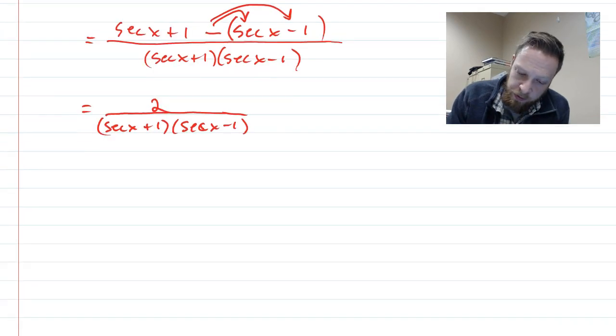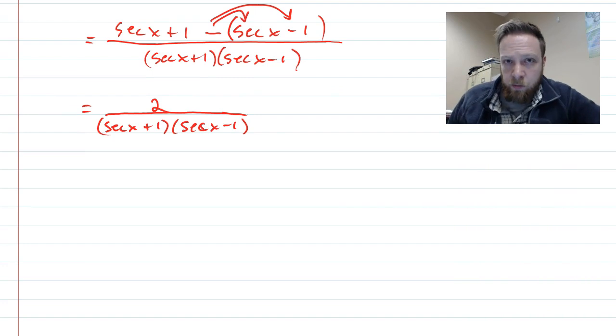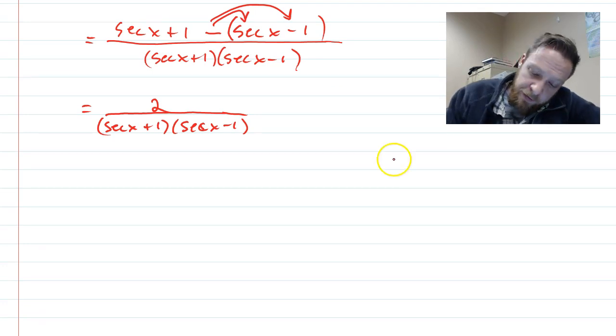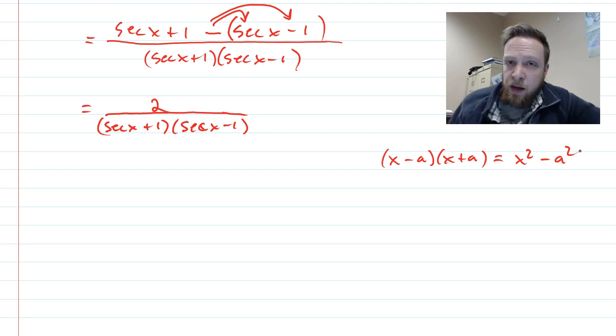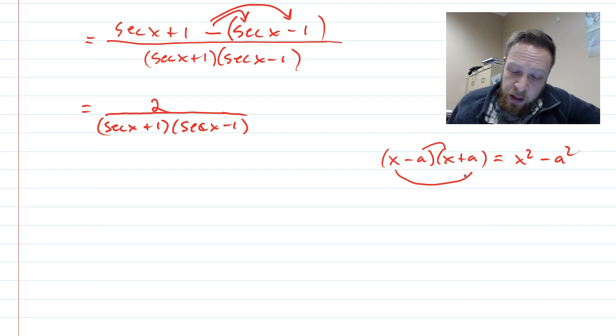Now, you may remember there was something called difference of squares with polynomials. If you multiply out x minus a, and x plus a, if it has that form, it's going to equal x squared minus a squared. The reason is that when you do the outsides and the insides, they are equal and opposite. They're going to cancel out.